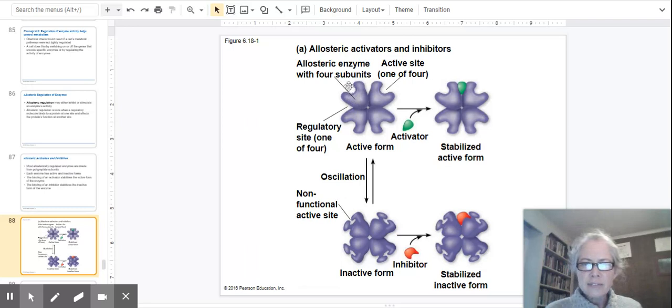However, it oscillates between this active form and, looking down here, this inactive form which alters the active site in such a way that it can no longer bind to substrate. This oscillation is a feature of enzymes that are regulated allosterically. Here we have a new molecule, an activator that could be a protein, could be substrate, could be some other non-protein chemical.